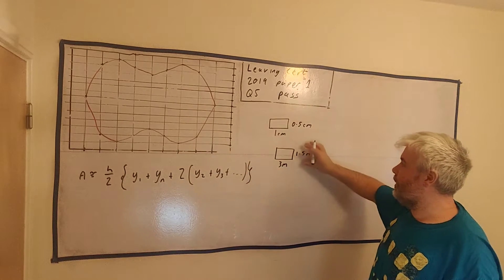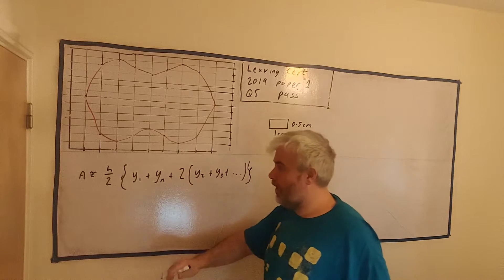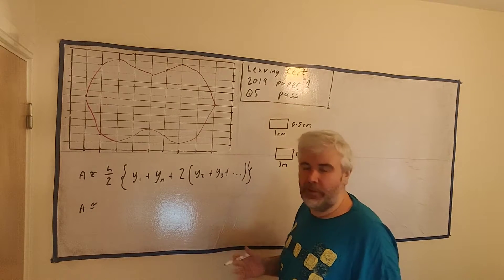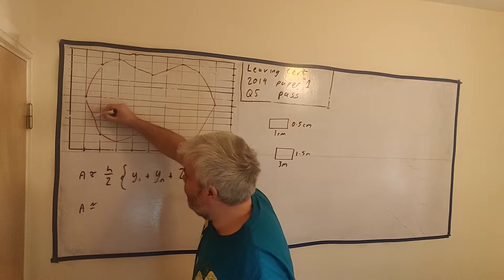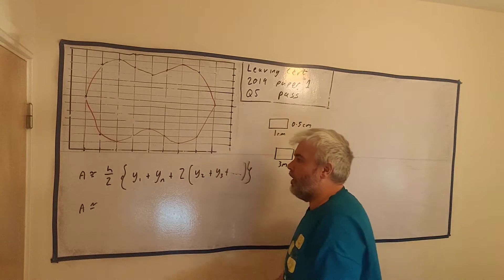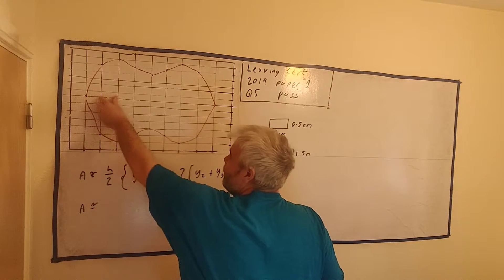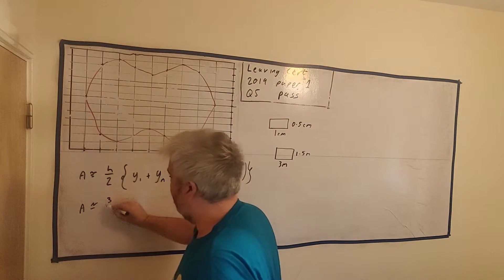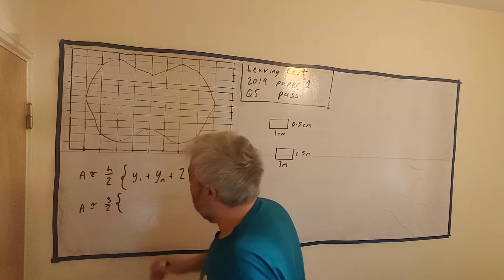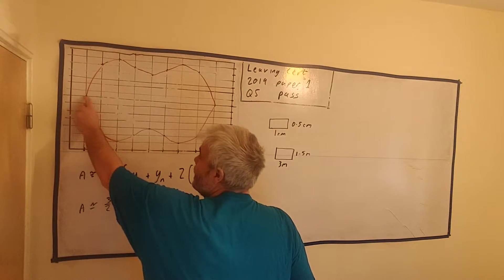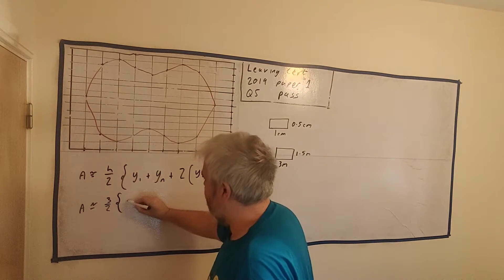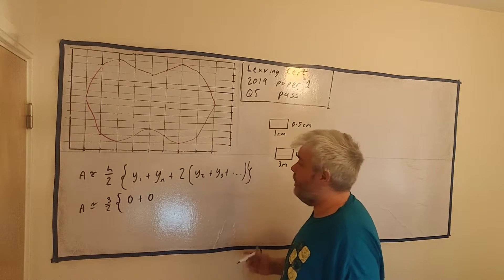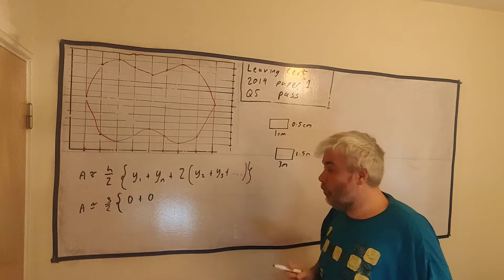This is how wide each of these blocks are, and this is how tall each of these blocks are. We can start now and fill in the formula. The area is approximately equal — not exact, but good enough, because this could be wobbly lines in between. So what is h? H is the interval, the regular interval, and in this case that will be three meters. So let's put that in: three, then divide by two. The first height is zero — there's no height at all. The last height is also zero.